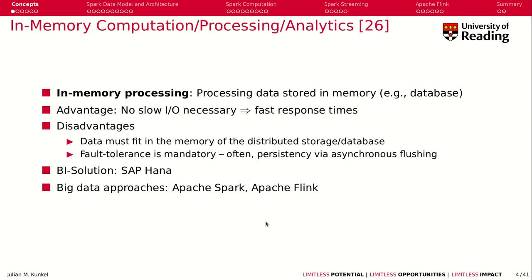Let's get started with the concepts. What is in-memory computation and processing? It means that we want to process our data, and all this data is stored in the memory of multiple servers. You can think of it like having a database that is solely in main memory. The advantage is that you don't need any kind of input/output, which gives you fast response times — particularly important for analytics. Disadvantages are that data must fit into memory of the distributed cluster, and you need fault tolerance. Prominent solutions include SAP HANA in business intelligence, and Apache Spark and Apache Flink in open-source big data approaches.